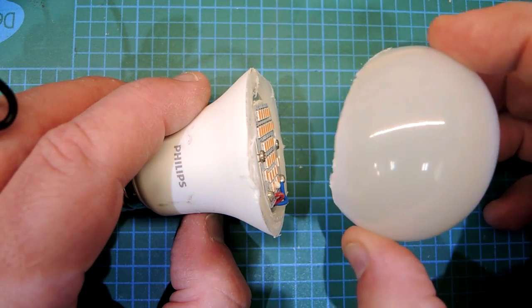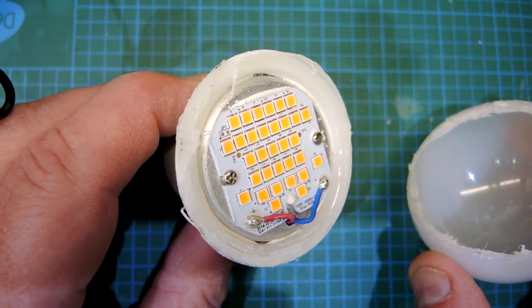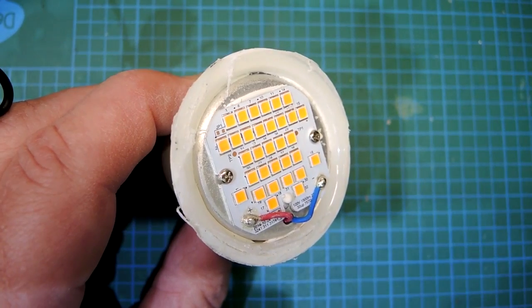I sawed the top off, obviously, and this is just a bit of plastic which diffuses the light. Looking downwards, you can see an array of LEDs, the yellow phosphor quite clearly showing.